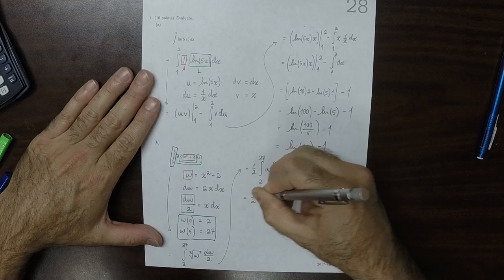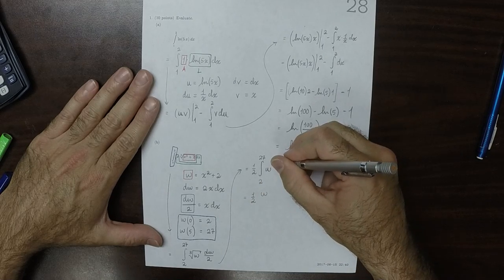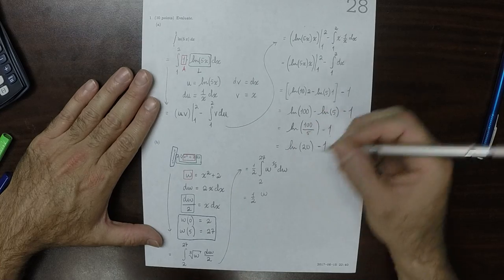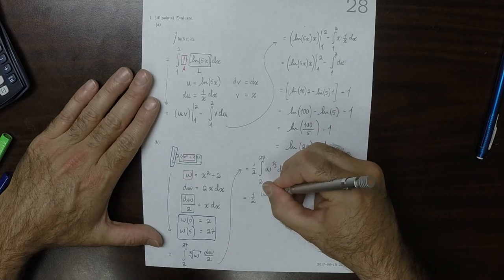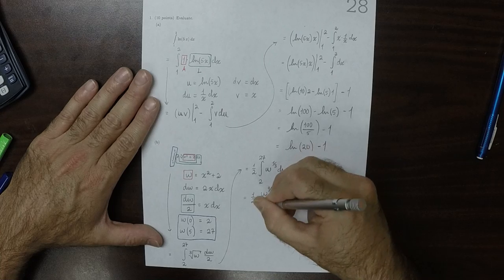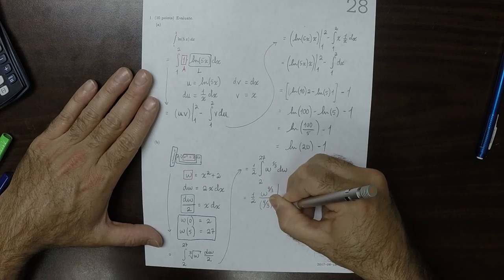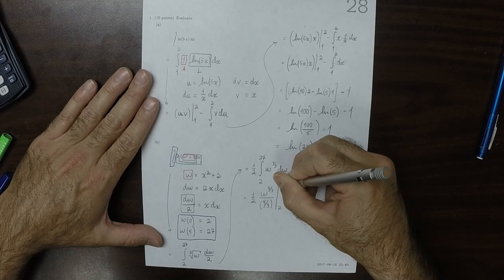So this is half w to, well, 1 third plus 1, that's 3 thirds which is 4 thirds, so that's the new exponent, and then divide by 4 thirds. Evaluate from 2 to 27.